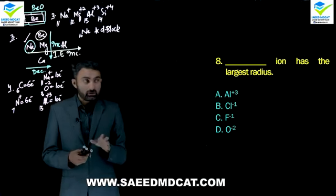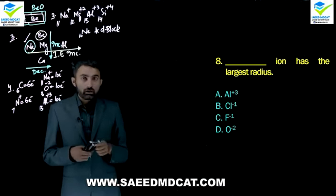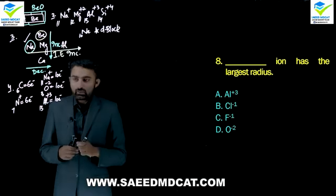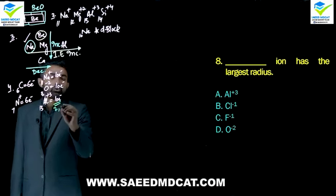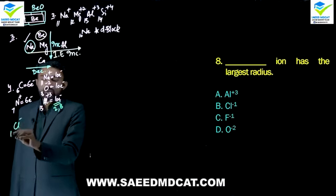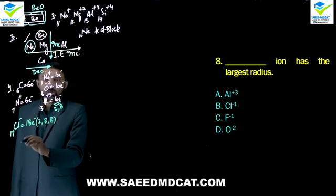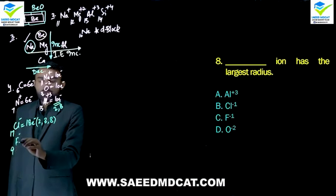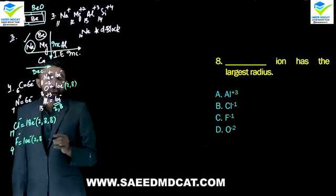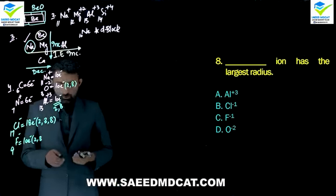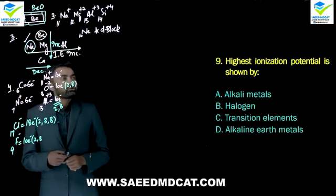Question 8: Which ion has the largest radius? First look at the number of shells — more shells generally means larger size regardless of charge. Aluminium 3+ has only two shells (2,8). Chloride (atomic number 17) has 18 electrons requiring three shells (2,8,8). Fluoride (9 electrons) needs only two shells. Oxide also needs only two shells. So chloride has the most shells (three), giving it the largest size. Beta option is correct.